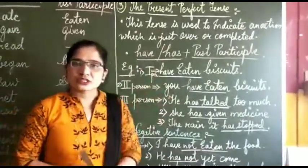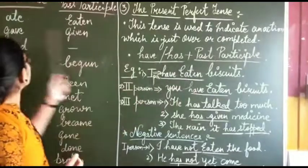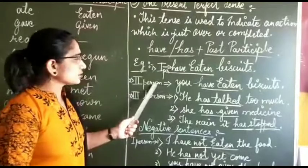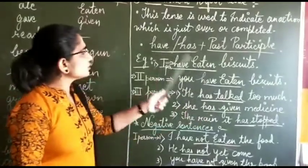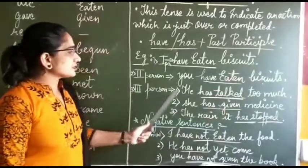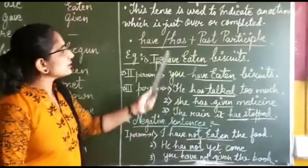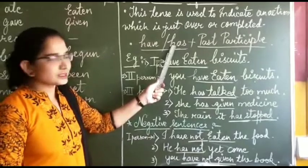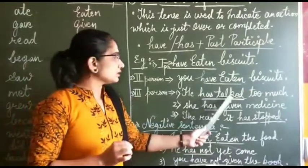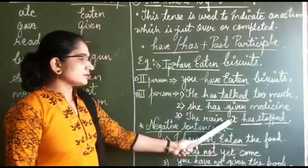Let me explain. With 'have' and 'has' — when the first person 'I' is used, we use 'I have' plus the past participle, for example 'eaten.' For the second person 'you,' we also use 'have': you have eaten biscuits. For the third person, 'have' changes to 'has.' He has talked too much. Here 'have' and 'has' are auxiliary verbs, and 'talked' is the action verb. She has given medicine. The rain has stopped, or it has stopped.